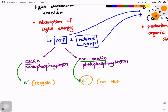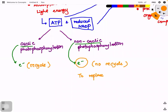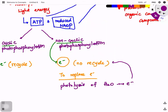In non-cyclic photophosphorylation, there is no recycling of electrons — they are continuously lost and received by other molecules. To replace the lost electrons, an event called photolysis of water (H₂O) takes place. Photolysis of water releases electrons that replace those lost during non-cyclic photophosphorylation. So in total, three reactions take place in the light-dependent stage: light-dependent reactions, light-independent reactions, and photolysis.